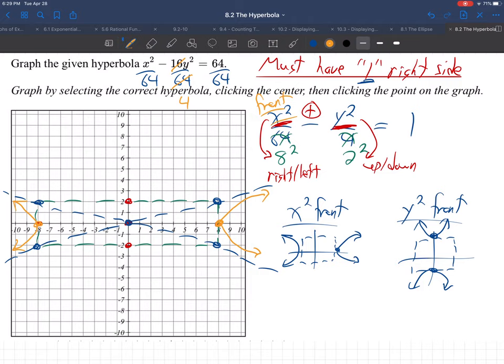There's how the branches go. They go forever. They get closer and closer to those dotted asymptote lines. These are called asymptote lines. They guide the graph.